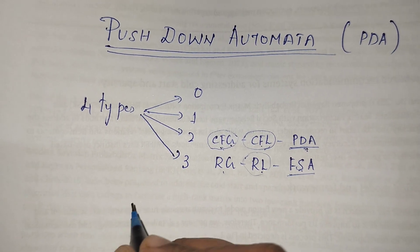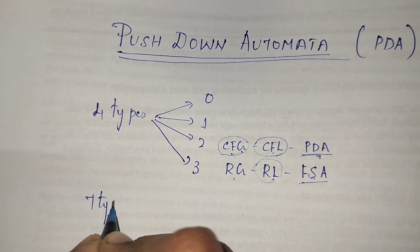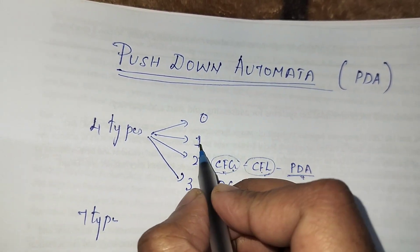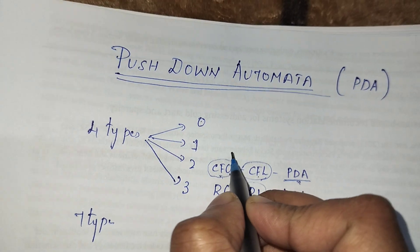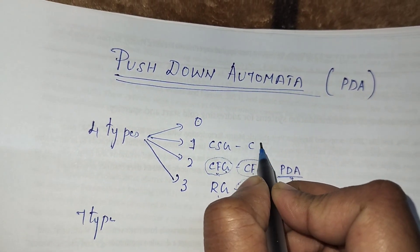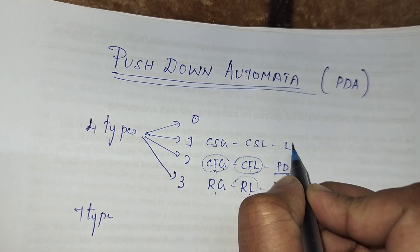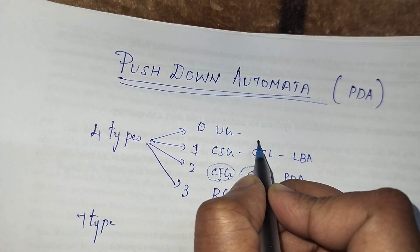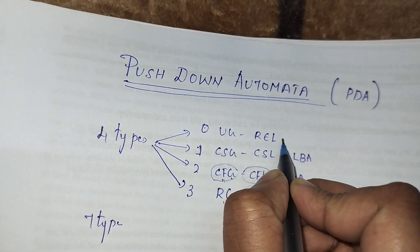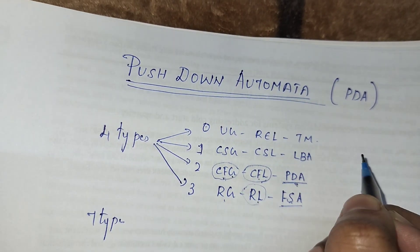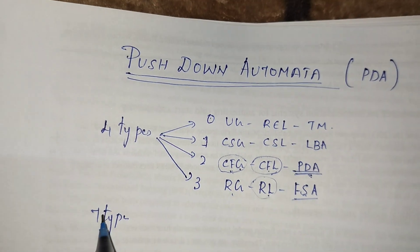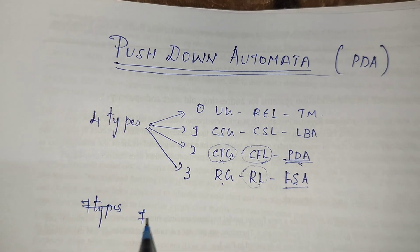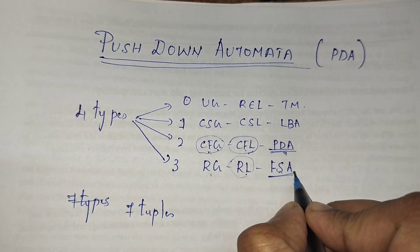Type 1 grammar, which is context-sensitive grammar, generates context-sensitive languages and is recognized by linear bounded automata. Type 0 is unrestricted grammar — the language is a recursively enumerable language and the machine is a Turing machine. Now, pushdown automata is represented using seven tuples.